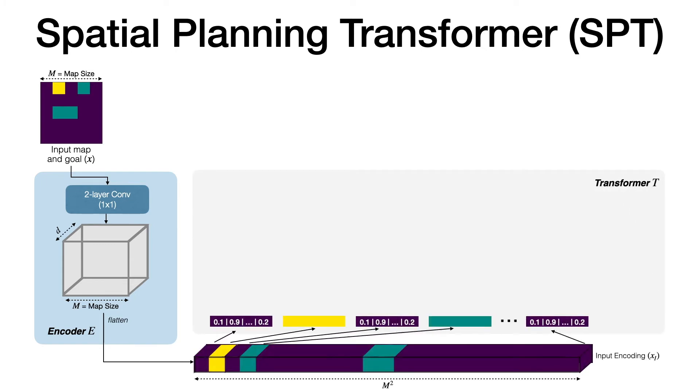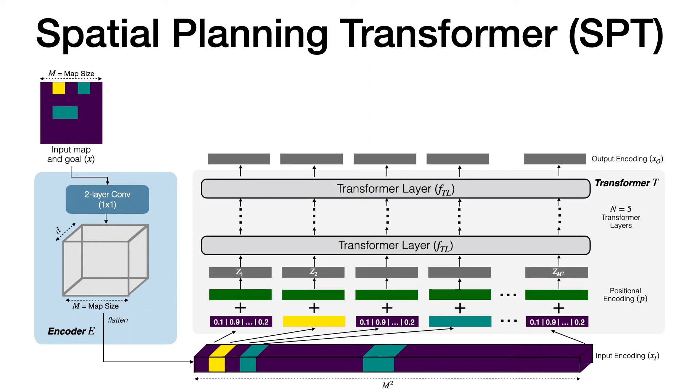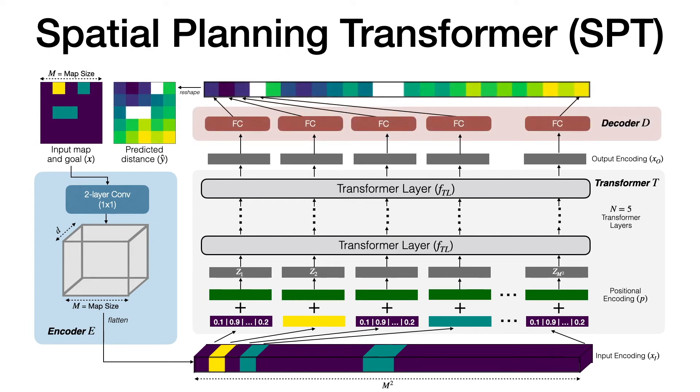The transformer module adds the positional encoding to each embedding and passes it through five identical transformer layers. The output of the transformer module is then passed through a decoder module which uses fully connected layers to predict the action distances at each location.